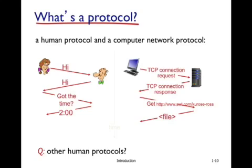You see a similar set of operations happening when two computers talk. You don't have to understand what a TCP connection request or connection response means — think of it as one computer saying hi to another. The first computer then sends a GET message asking for a particular file, and the second computer provides that file. This whole thing works because there is a common set of rules that both computers understand, meaning there is software implemented on both computers that follows these specific rules.